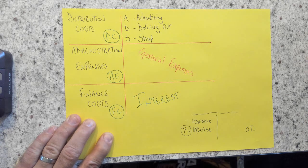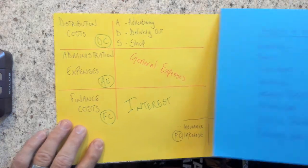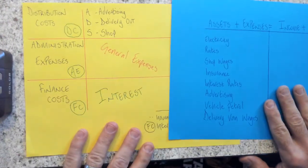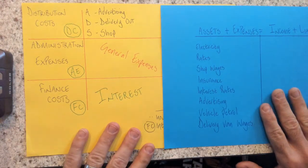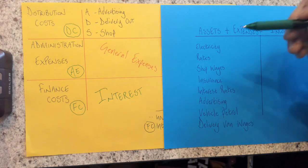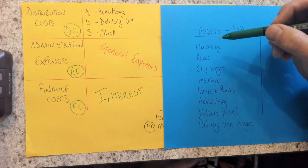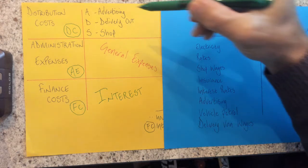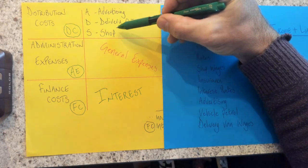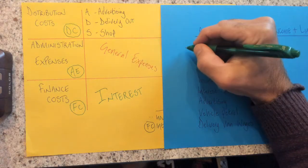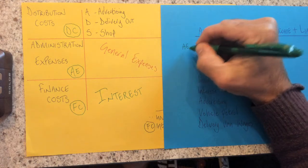So if then we were to complete our classification over here, then we should be able to use this little trick to help us. So electricity. Electricity is nothing to do with a shop. It's a general expense. So we're going to classify that as an administration expense.